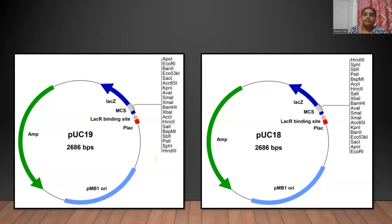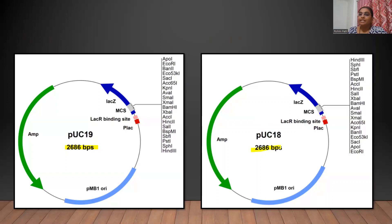Here is the structure of both of the plasmid vectors — pUC-18 and pUC-19. When you look at pUC-18 and pUC-19, both of them have the same number of base pairs, and that is 2686 base pairs.